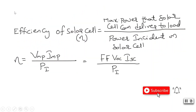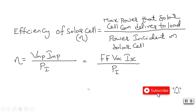The efficiency of a solar cell equals the maximum power delivered to the load divided by the power incident on the cell: η = Vmp · Imp / Pi = FF · Voc · Isc / Pi. For high efficiency, it is important to have a high fill factor, high Voc, and high Isc. Pi is the incident power, typically 1000 W/m². With this we have seen all the solar cell parameters which help us analyze solar cell performance. Thank you for watching.